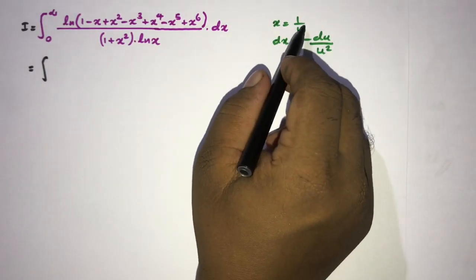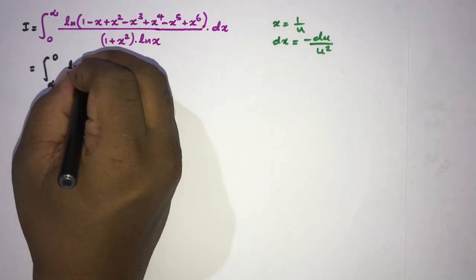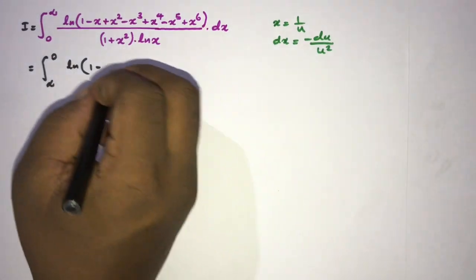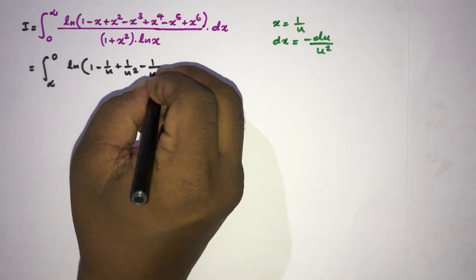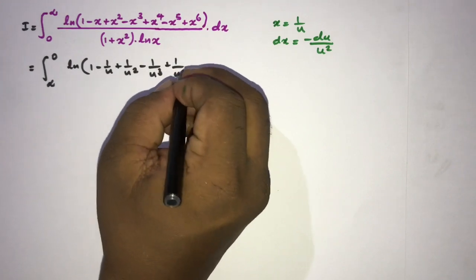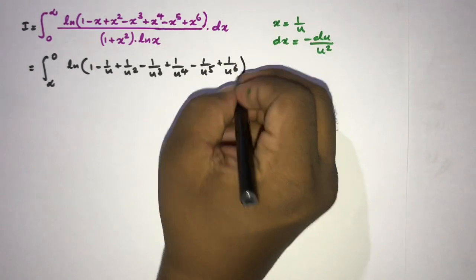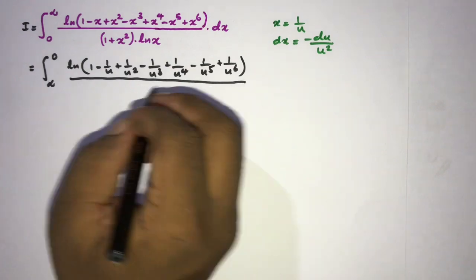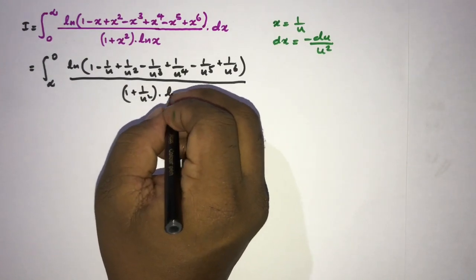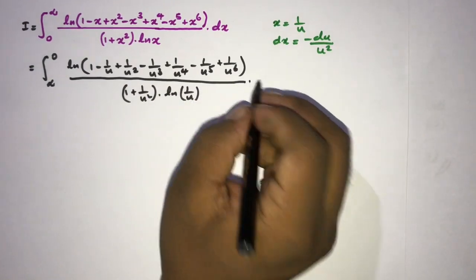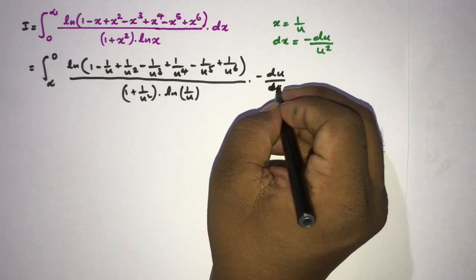We plug in the substitution 1 over u. The limits change from infinity to 0. The numerator becomes the natural log of 1/u + 1/u² − 1/u³ + 1/u⁵ + 1/u⁶, the denominator has 1 plus x squared becoming 1 over u squared, natural log of x becomes natural log of 1/u, and dx becomes minus du over u squared.